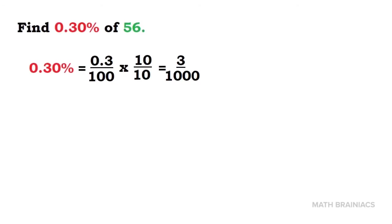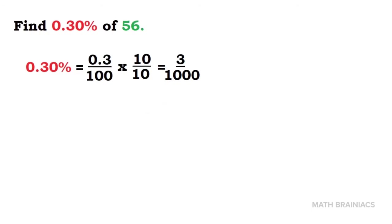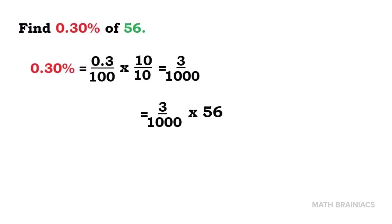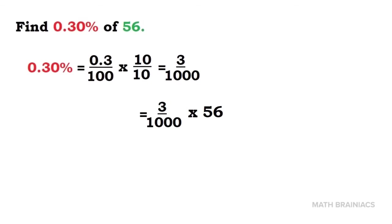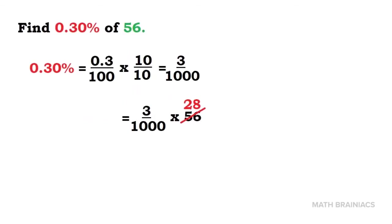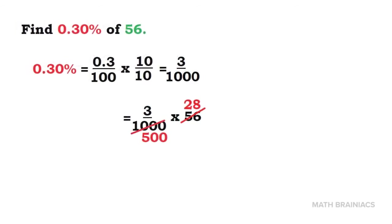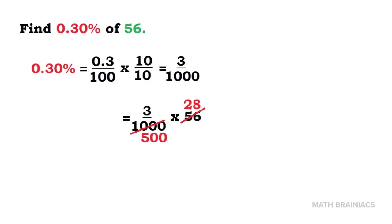And 0.3 times 10 is 3, and 100 times 10 is 1,000. Therefore, 0.3% is 3 over 1,000. We can now multiply 3 over 1,000 by 56. Let us take 2 as the common factor of 56. Therefore, 2 in 56 is 28, and 2 in 1,000 is 500.